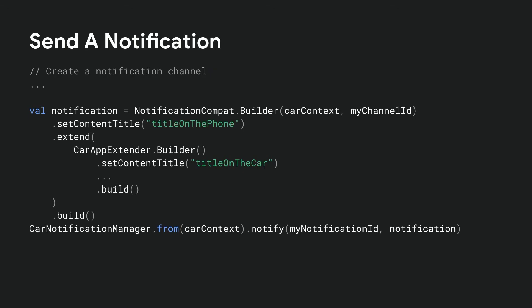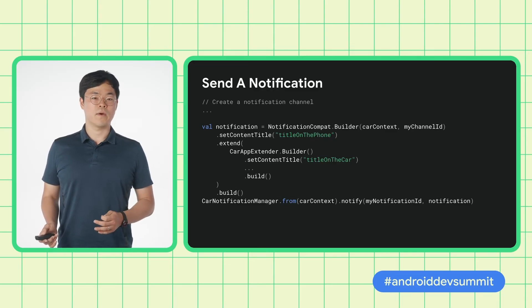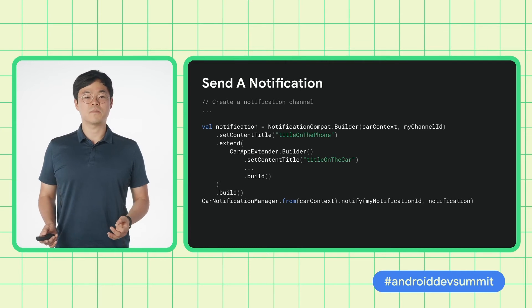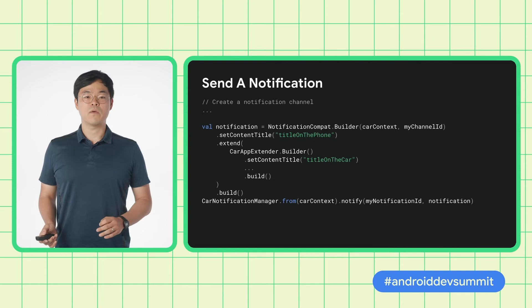To send a notification, construct a normal notification object, optionally extend it with CarAppExtender, and send it with CarNotificationManager. In Android Auto, CarAppExtender allows you to differentiate the notification style and content between the phone and the car screen. In both Android Auto and Automotive OS, when the notification is displayed in the car screen, any content set in the CarAppExtender will override the equivalent notification content.